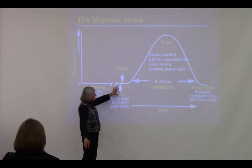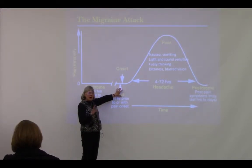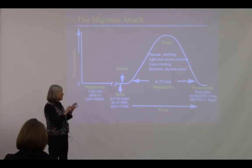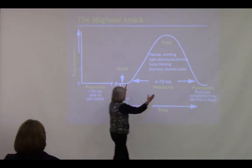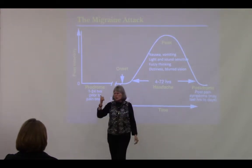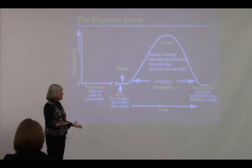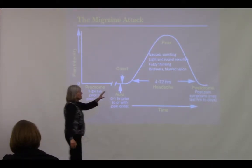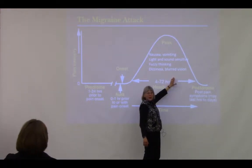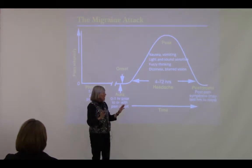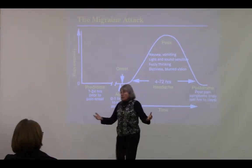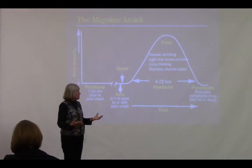An aura is a neurologic event that can happen before the headache portion — the most common type is visual. Then the headache comes on, associated with light sensitivity, sound sensitivity, nausea, maybe vomiting, fuzzy thinking, and blurred vision. That blurred vision is part of the migraine itself, not part of the aura. After the pain, people can have a postdrome where they don't feel well for a few hours to several days.